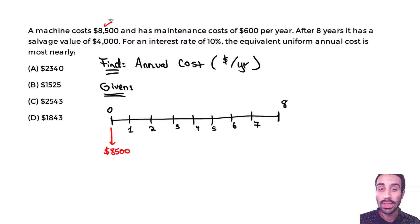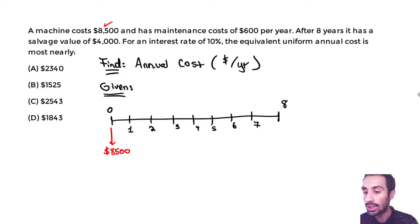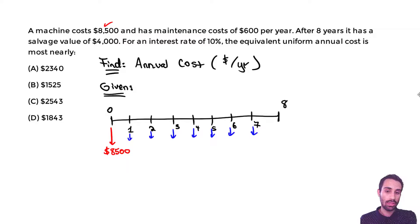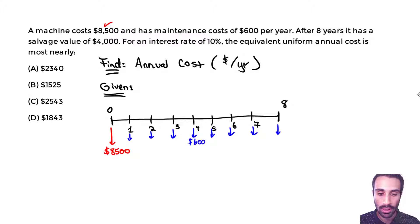The maintenance costs are $600 per year. Always when you have these maintenance costs, you do it every year, so we're going to go all the way to year 8. We have arrows going down every year from 1 to 8, all the same — we put down $600 every year. It's an annual value.